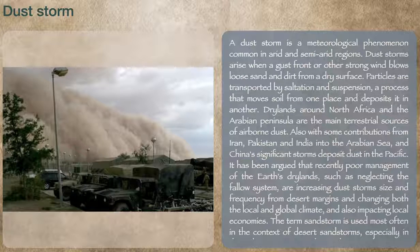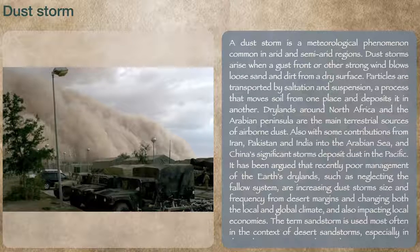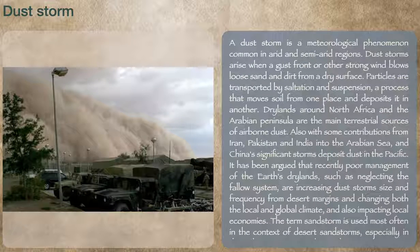Dry lands around North Africa and the Arabian Peninsula are the main terrestrial sources of airborne dust, with some contributions from Iran, Pakistan and India into the Arabian Sea, and China's significant storms deposit dust in the Pacific.